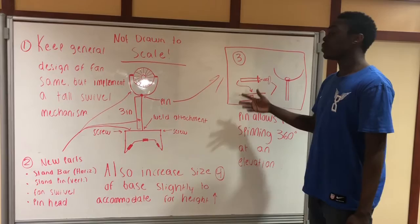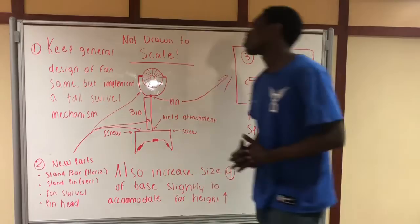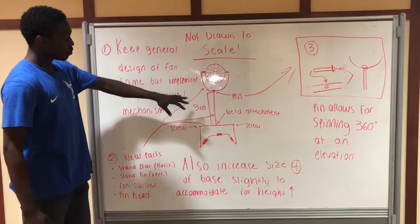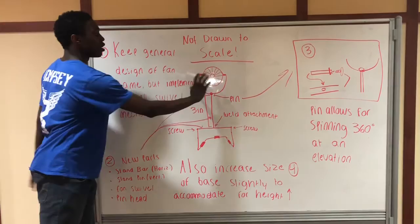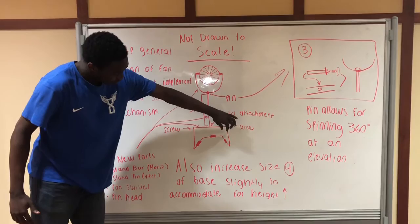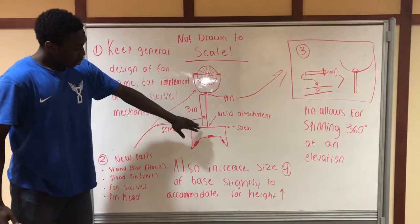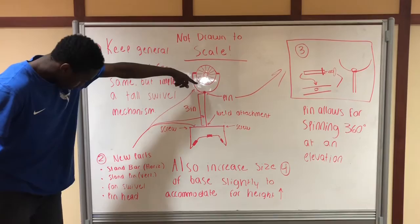Throughout this video we discussed the Gantt chart, the customer needs, and the disassembly to arrive at our final redesign of the product. We kept the same general design of our fan but implemented new parts. The redesign is a tall swivel mechanism that allows the fan to spin vertically 360 degrees and horizontally 360 degrees. The new parts added were the horizontal stand bar, connected to the base with screws on the sides, and the vertical stand pin, which is welded into the horizontal stand bar and extends 3 inches into the fan swivel, giving it that 360-degree horizontal spin.